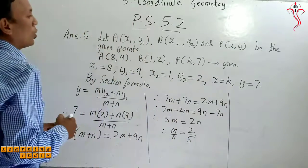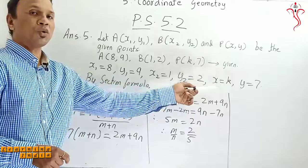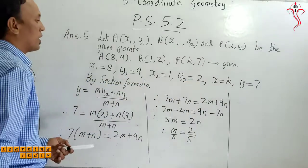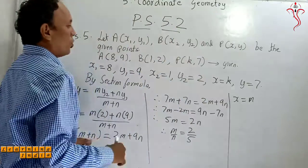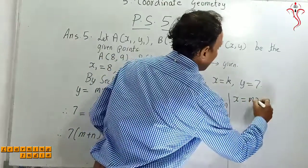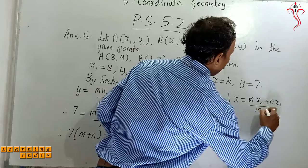Now what we will do? We want to find out the value of X now. X is equal to k, so we have to find k value. So X is equal to, you know by section formula only, MX2 plus NX1 upon M plus N.